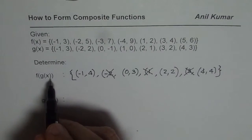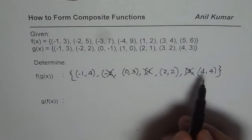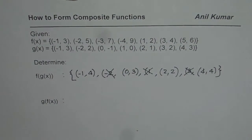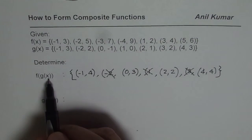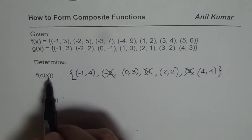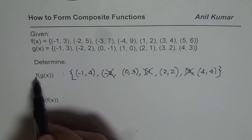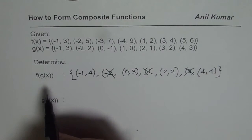So basically, f of g of x is a set of these 4 points. From this example it becomes clear that first we find g of x, and then g of x becomes the input for f of x — that is how you get f of g of x.